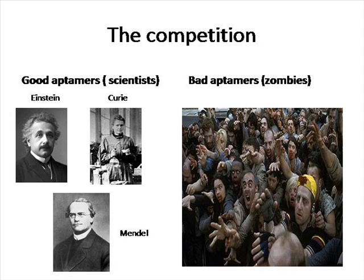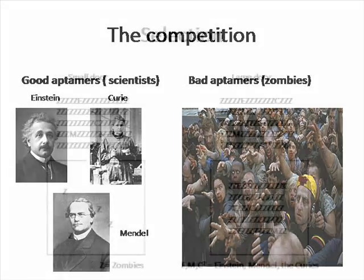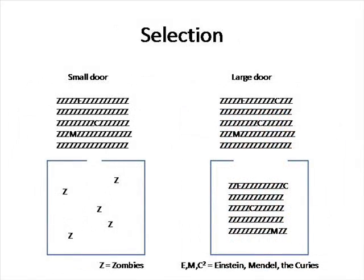We need to select for their ability against that of a lot of zombies. Selection can be thought of as allowing individuals into a room. The size of the door to the room is the availability of a target molecule for them to bind to. If we use a very small amount of target molecule, we will limit the number of individuals that can bind to it in any given selection round. Given that there are a lot of zombies, they can compete for access to the target better than our brainy team.